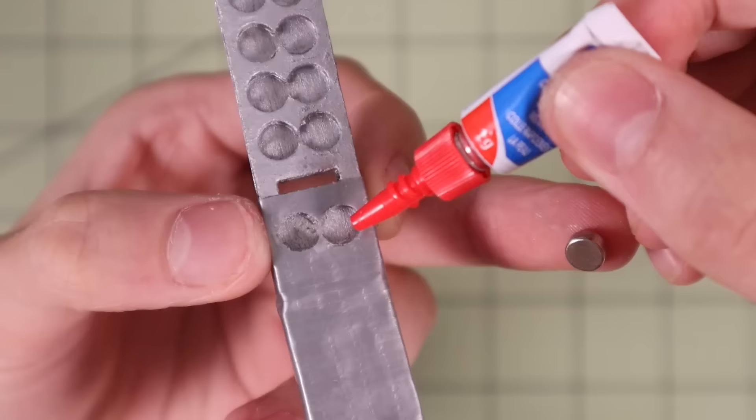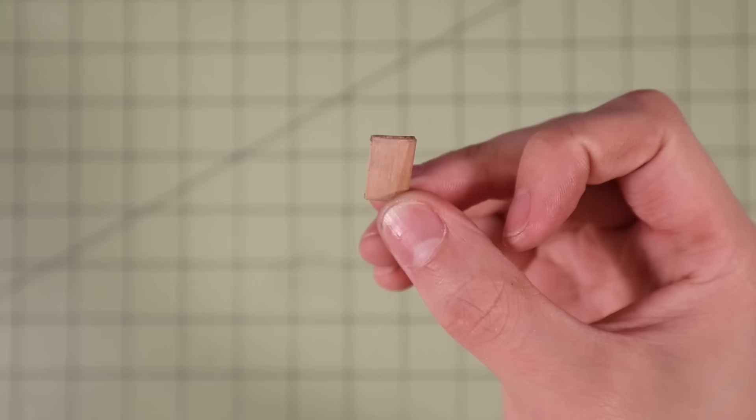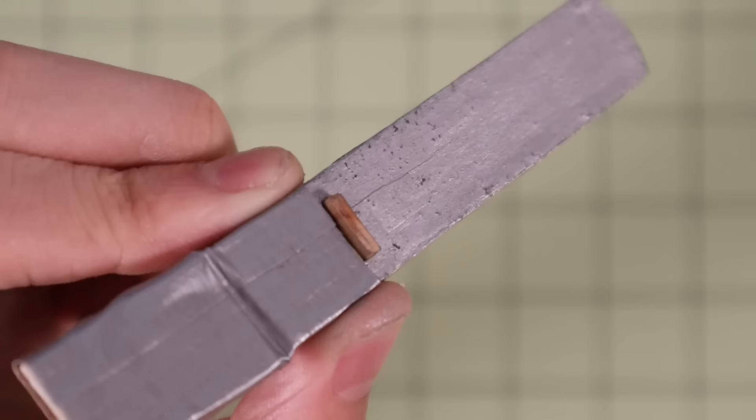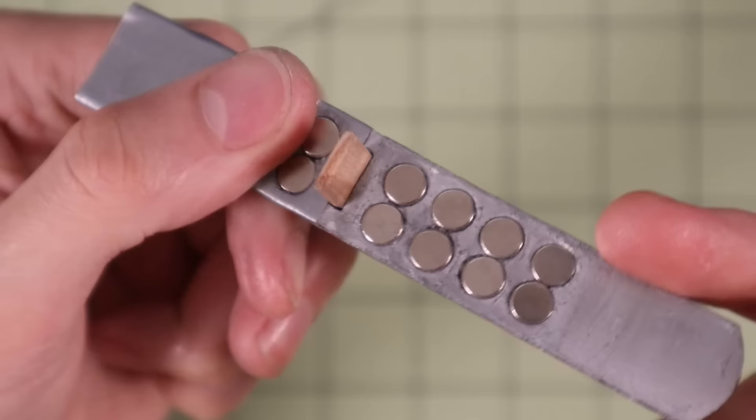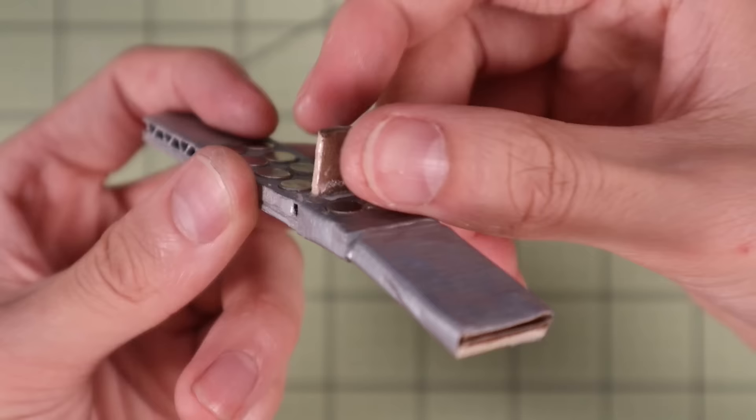Now it's time to super glue 6x3 magnets in all of those holes. Next I can insert this small popsicle stick inside that slot and glue it in place. This tiny stick is going to block the bullet from shooting out until that stick gets lowered down. I made sure to add more than one layer of super glue because that piece will have to endure a lot of pressure and we don't want it to crack or break.